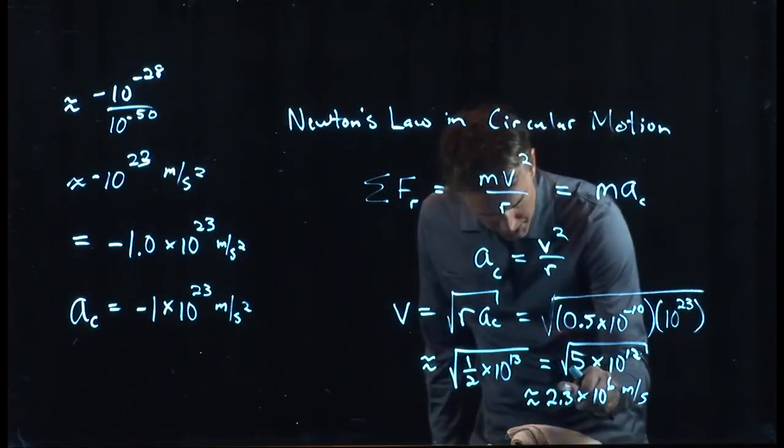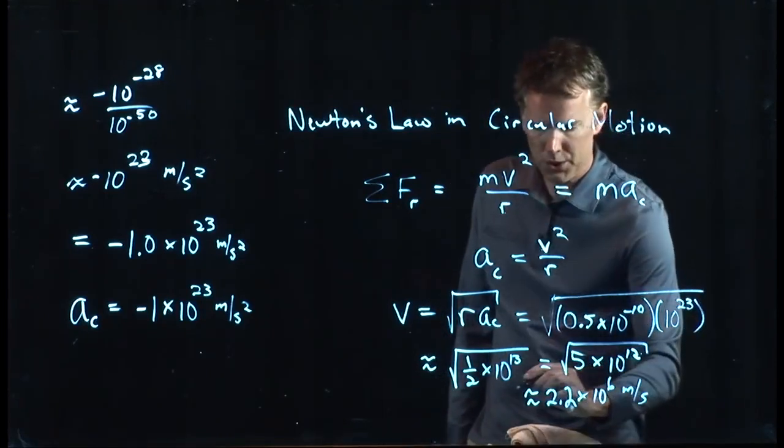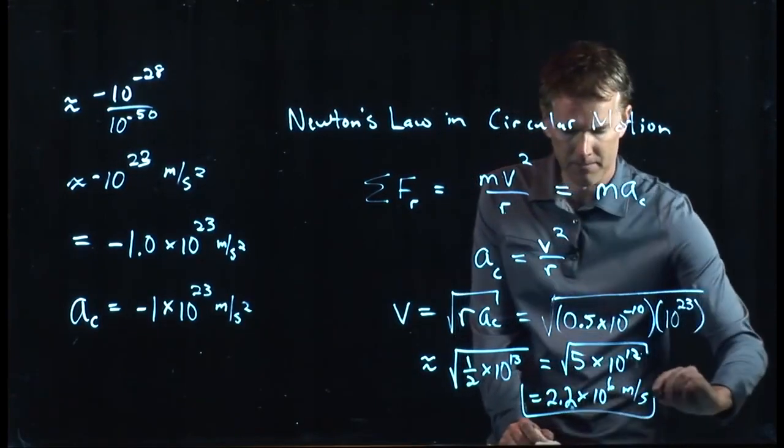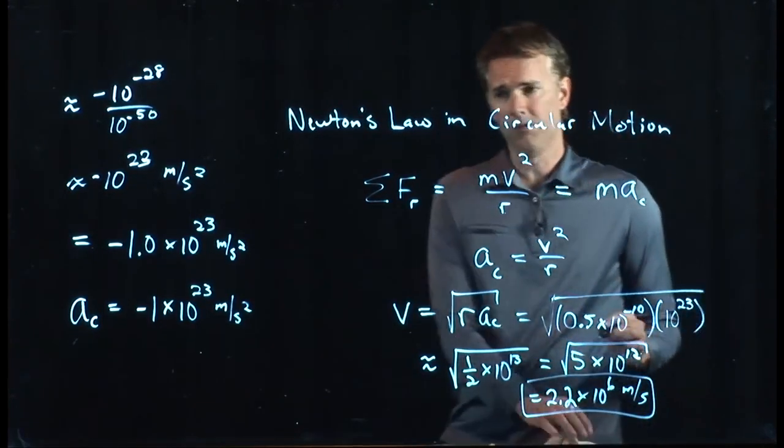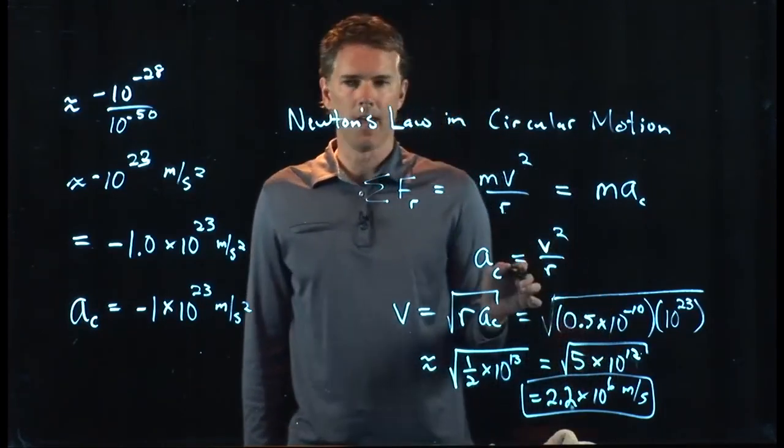2.2 times 10 to the 6 meters per second. Which is cruising. Electron is really, really moving very fast in that hydrogen atom.